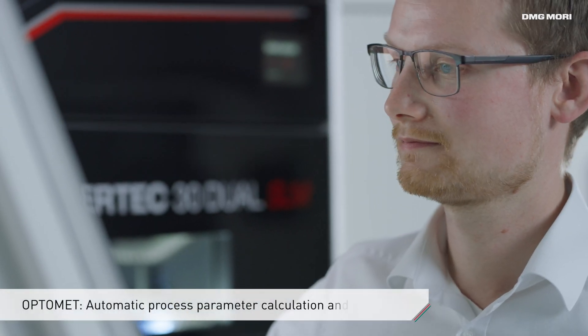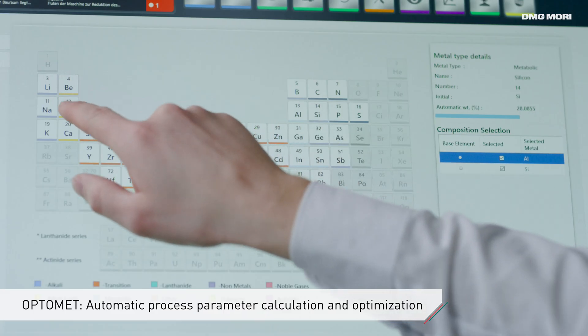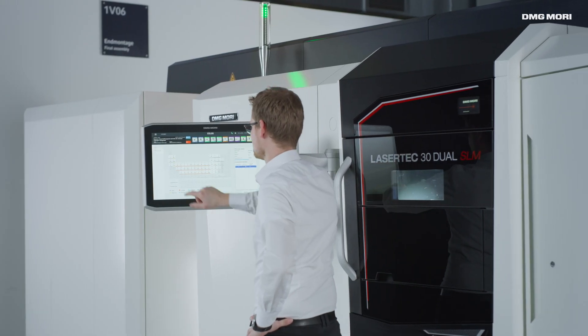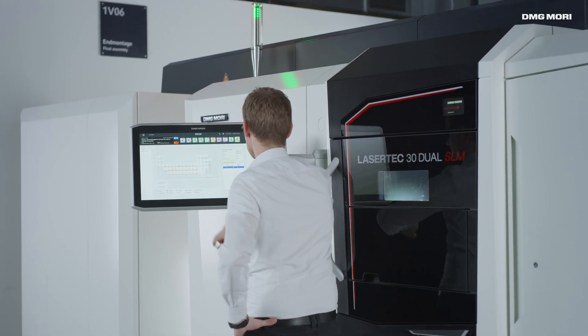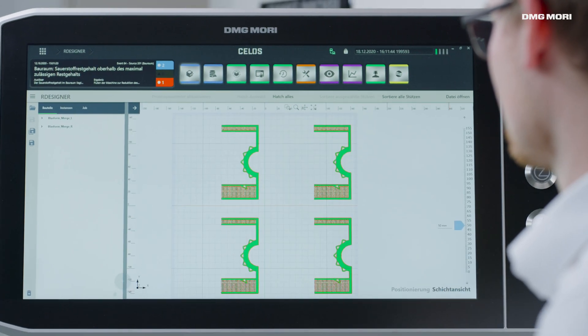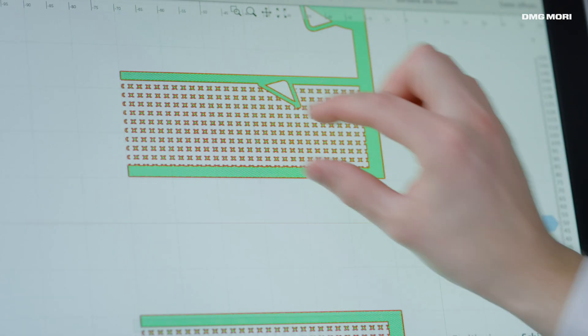The automatic calculation of process parameters with OptiMet makes it possible to create new parameter sets within minutes. Special consideration is given to the powder properties ensuring the highest level of part quality while easy adjustment of layer thicknesses with only a few mouse clicks guarantees maximum flexibility.